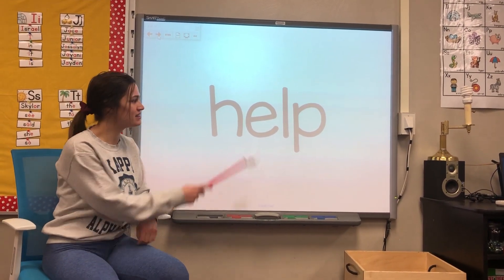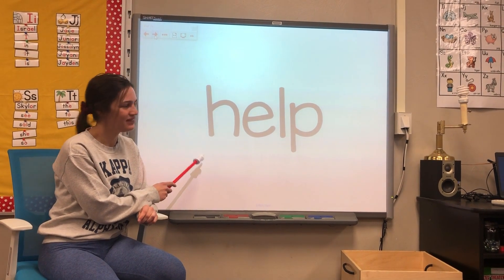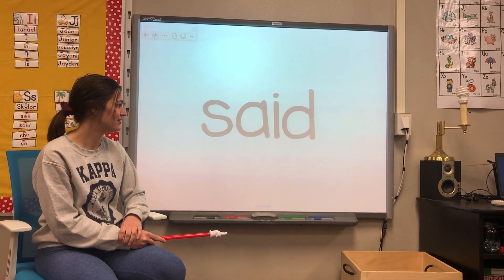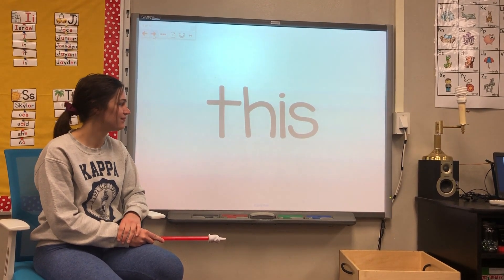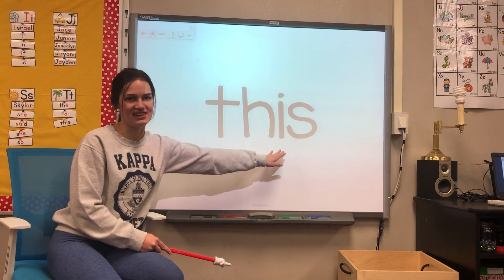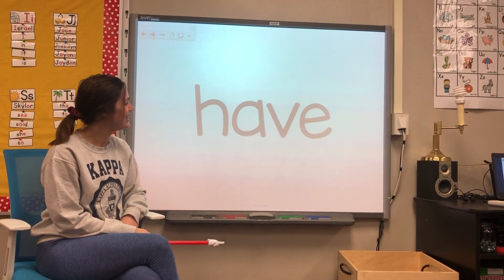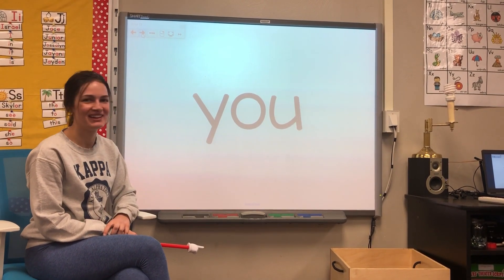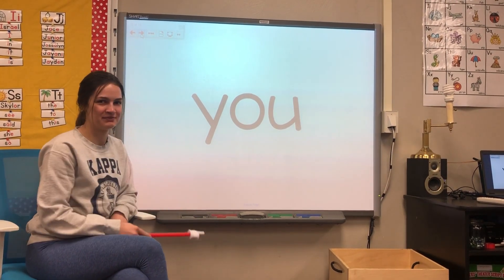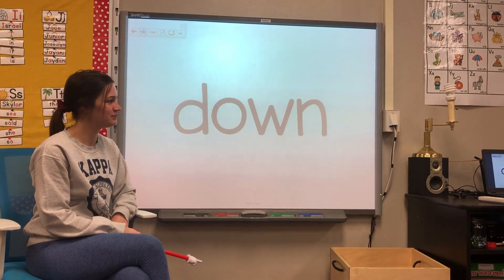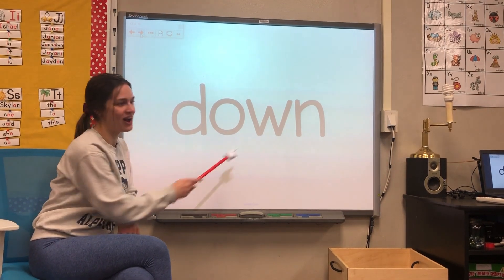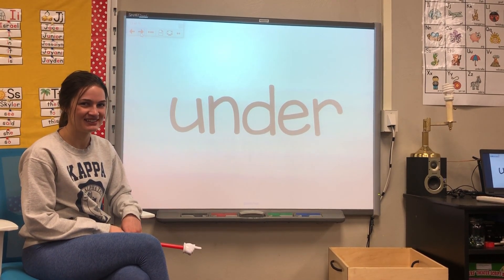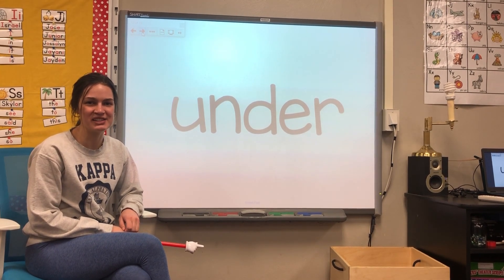Let's review some sight words. What is this sight word? Help. See if you can say this next sight word before I say it. Where. Good job — that word is 'said'. That's right, this word says 'this'. That's right, this word says 'have'. Good job, that says 'she'. That says 'you'. This word is 'good'. And this word — that's right, it says 'down'. Our word here is 'under'. Did you get that one before me? Good job. I'll see you again tomorrow for calendar.